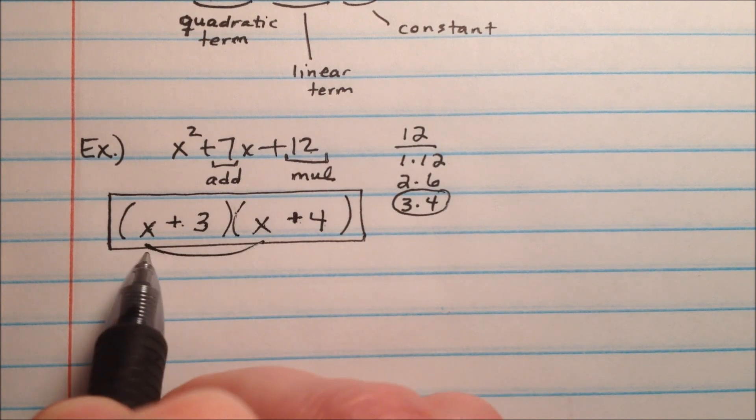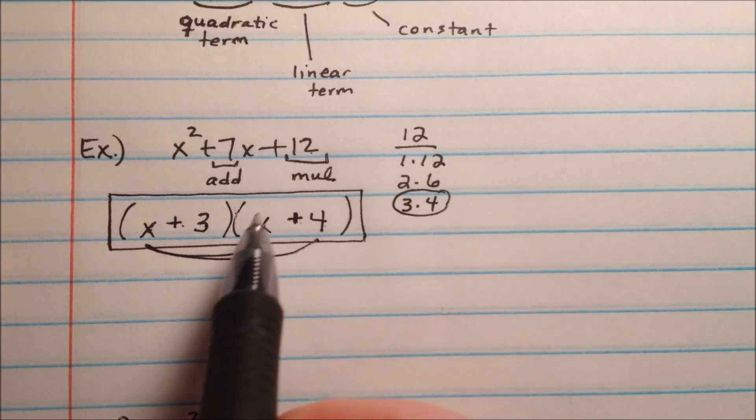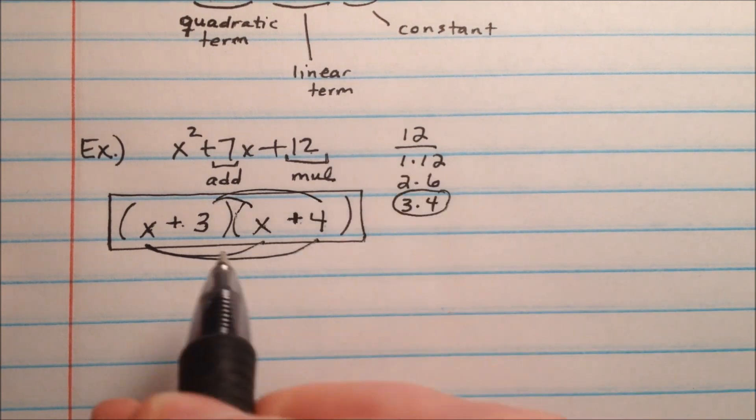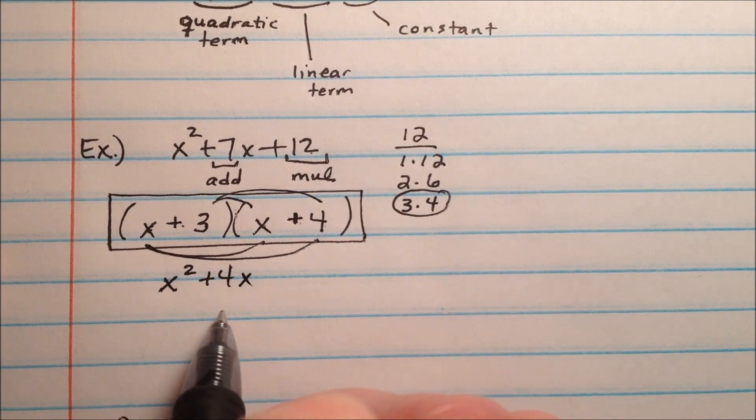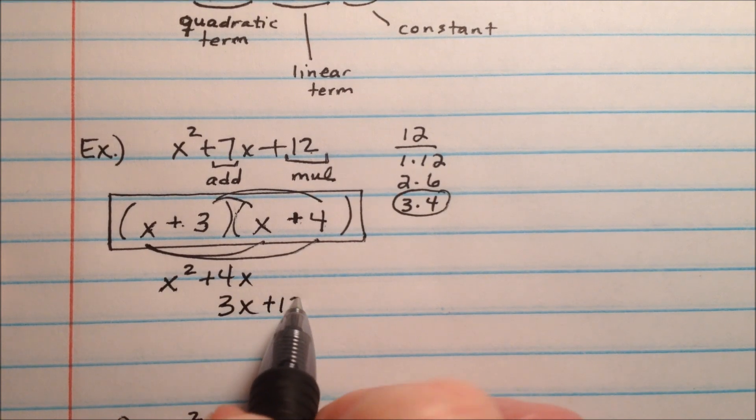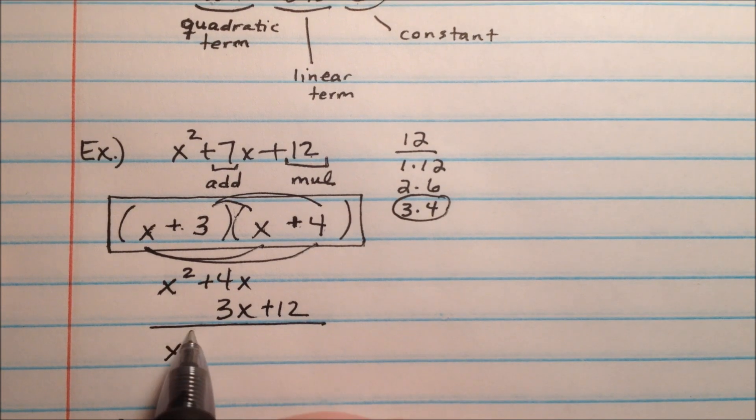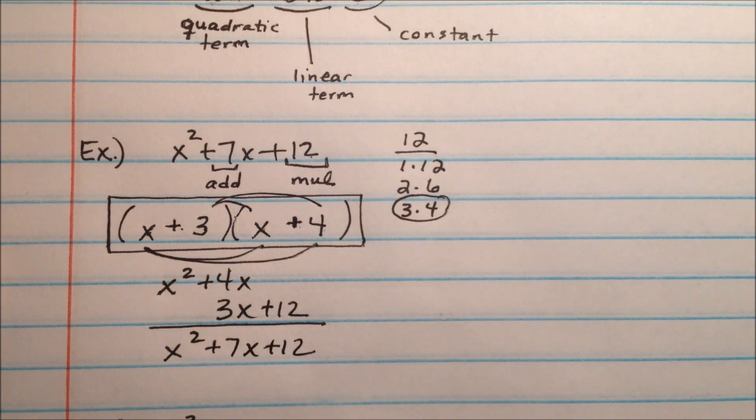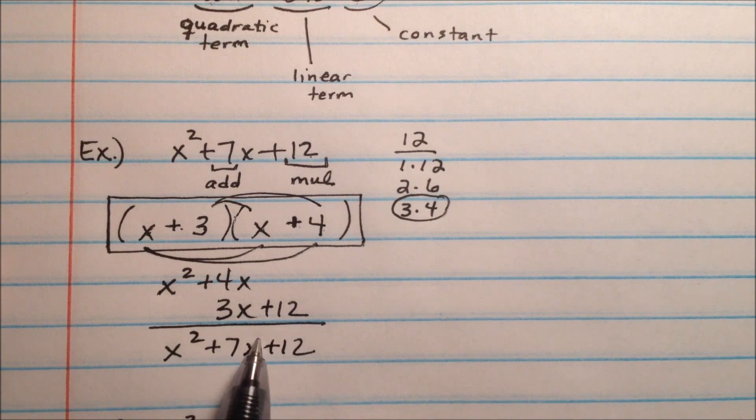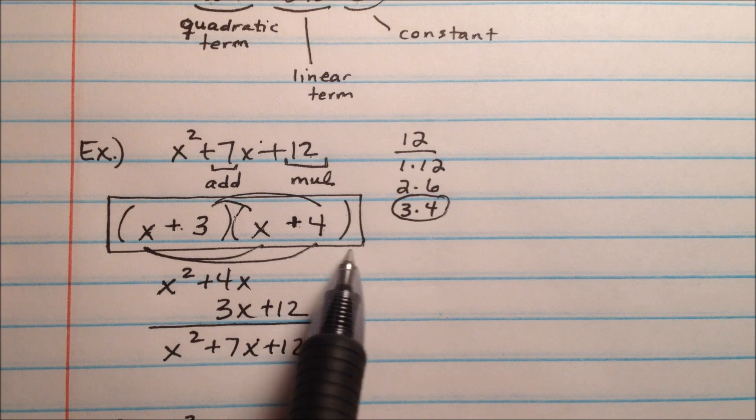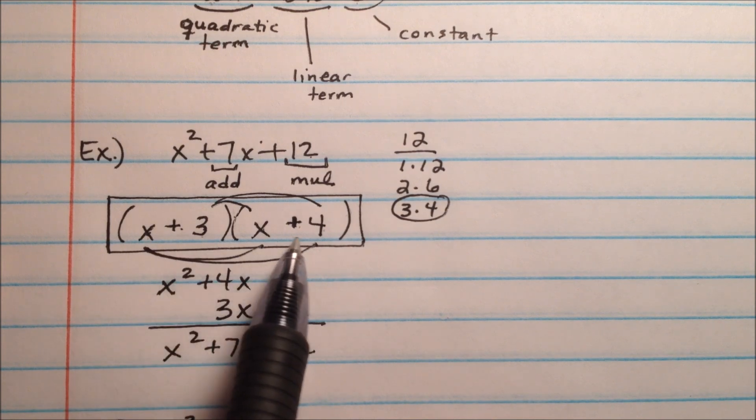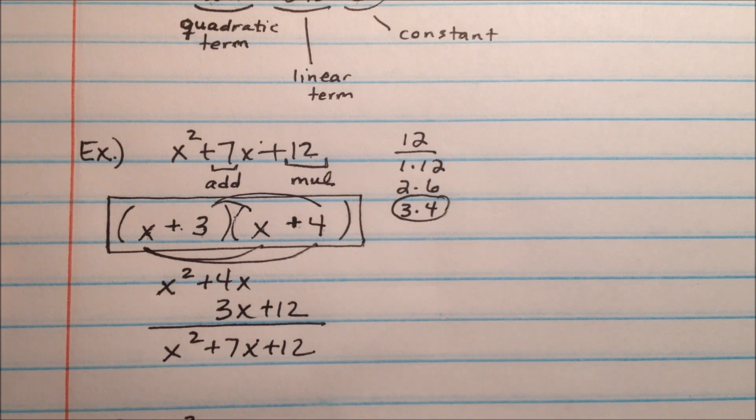So we'll take x times x and x times 4, and then 3 times x and 3 times 4. So we'll get x squared plus 4x, and then 3x and 12. And we'll see that when we do this, x squared plus 7x plus 12, and we did indeed get what we started with, so our factoring of this into x plus 3 and x plus 4 was appropriate and correct.